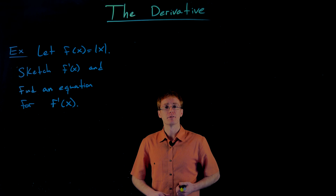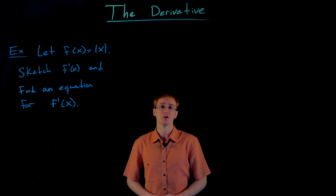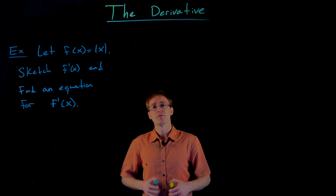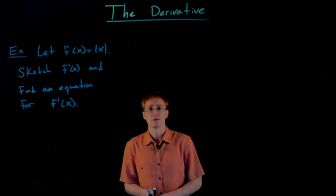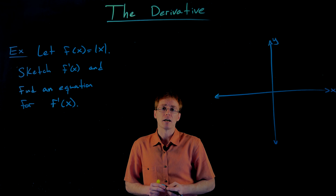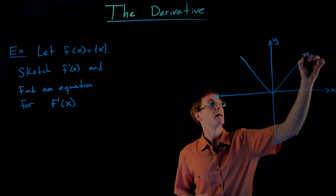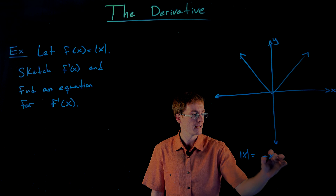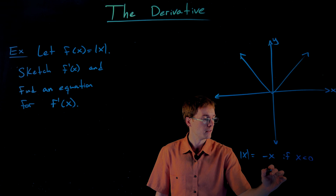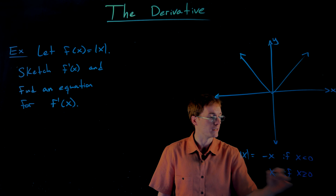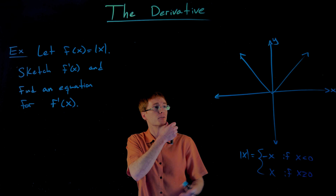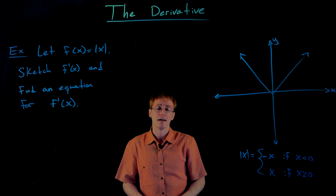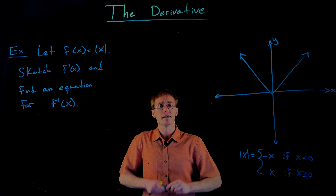In this next example we are given the function f of x defined as the absolute value of x. We want to sketch the graph of the derivative f prime of x, as well as find an equation for the derivative of our absolute value function. We can use our previous approach of using the graph of the function to sketch the derivative. The absolute value function has that V-shape — you can think of it as a piecewise function: it equals negative x when x is less than zero, and positive x when x is greater than or equal to zero, producing a line with slope negative one on the left half and slope positive one on the right half.